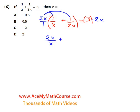And then we multiply 2x over 1 by 1 over 2x. 2x times 1 is 2x, 1 times 2x is 2x. And that's equal to 3 times 2x which is 6x.